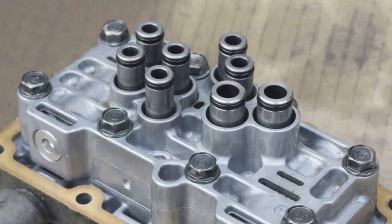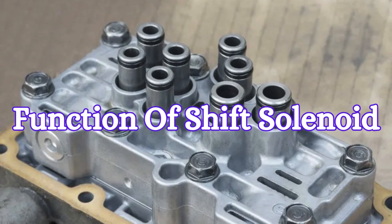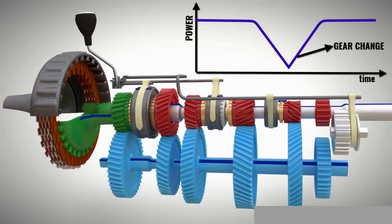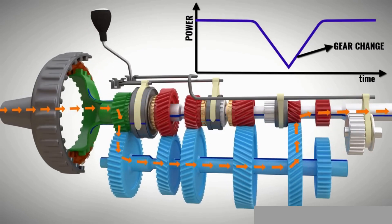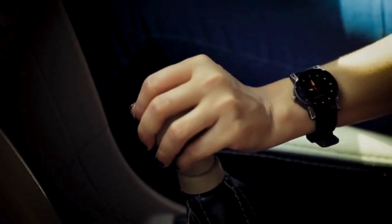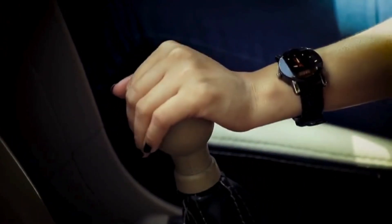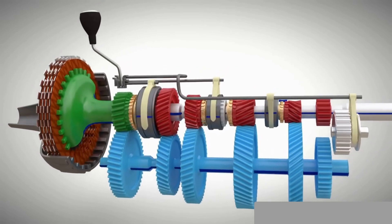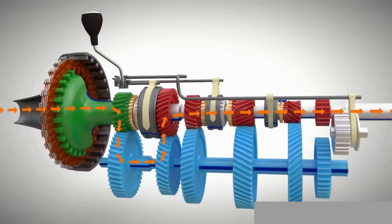First things first, let's understand the function of the shift solenoid. The primary function of the transmission shift solenoid is to control the flow of transmission fluid to various parts of the transmission, enabling smooth and accurate gear changes. When you change gears, the solenoid adjusts the fluid flow to ensure that the clutches or bands engage or release at the right time.